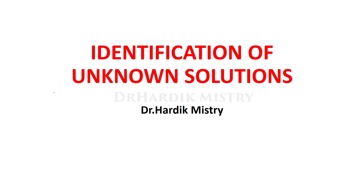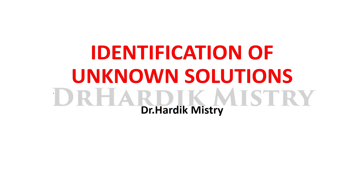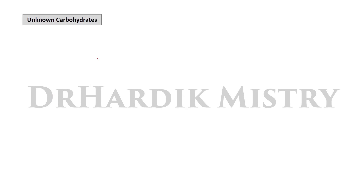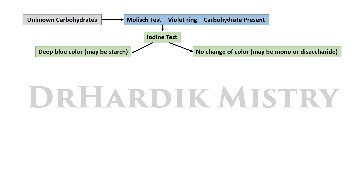Hello dear students, welcome to Practical Biochemistry. The topic is identification of unknown solutions — identification of unknown carbohydrate solutions. First, you have to perform Molisch's test. If you see a violet ring, then carbohydrate is present.